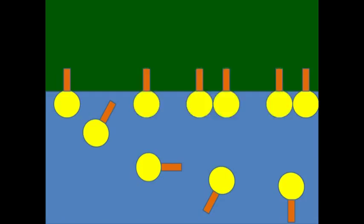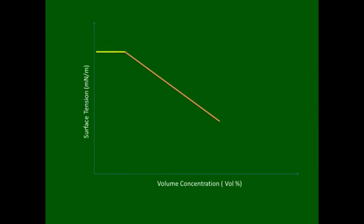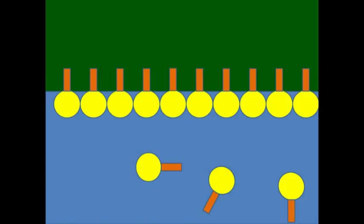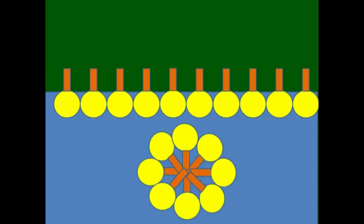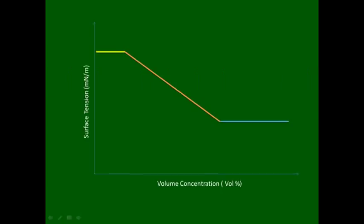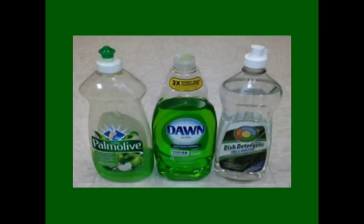Then, as the surface accumulates surfactant, the surface tension will decrease. When there is no more space on the surface, a micelle will form with the hydrophobic tails inside and the hydrophilic heads outside. As the concentration becomes even higher, micelles begin to form in the bulk of the solution, but the surface tension stays the same. This is referred to as critical micelle concentration.